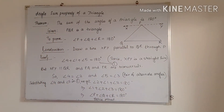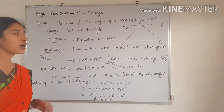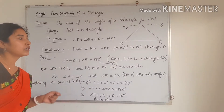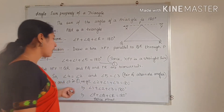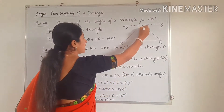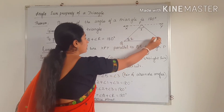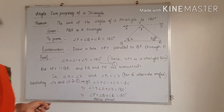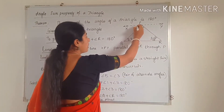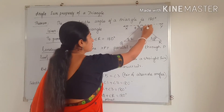Now we can start our proof. But before proving, let us mark the angles. There are a total of five angles present, so we will mark these angles. I am marking angle P as angle 1, this angle as 2, and this angle as 3. This angle I am marking as 4, and this one as 5.